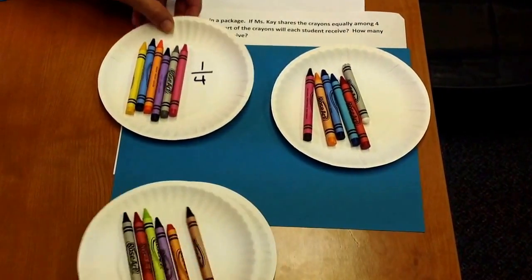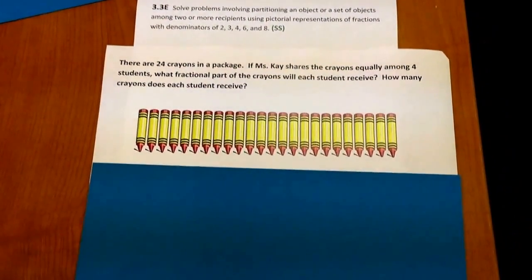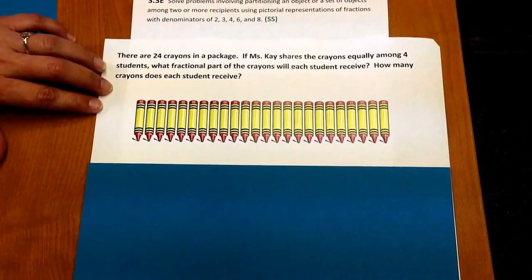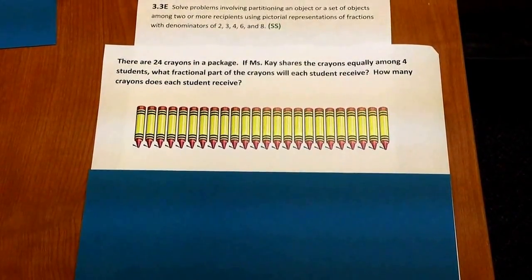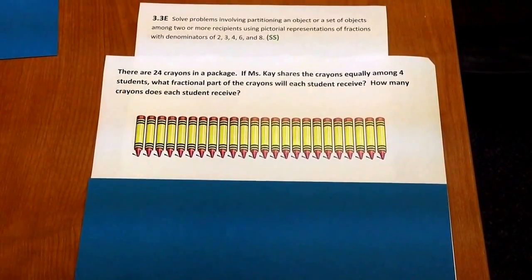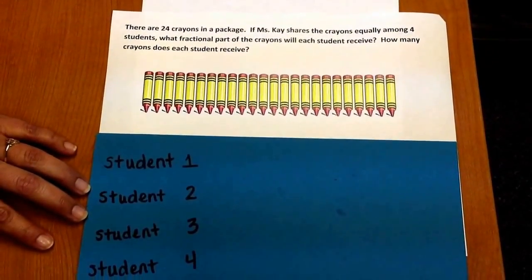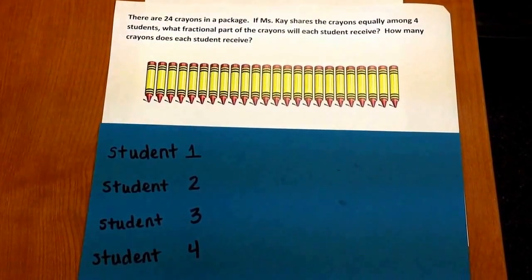Now I'm going to keep the same scenario, but we're going to look at a pictorial representation. So here we have a picture of 24 crayons. We're going to do basically the exact same thing as with the concrete crayons, but using this pictorial representation. We have four students, and each student is going to receive an equal number of crayons.